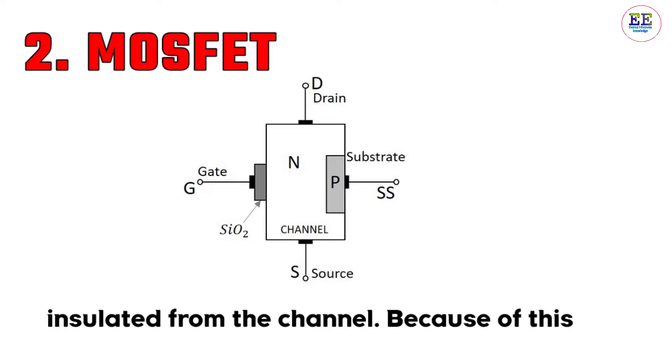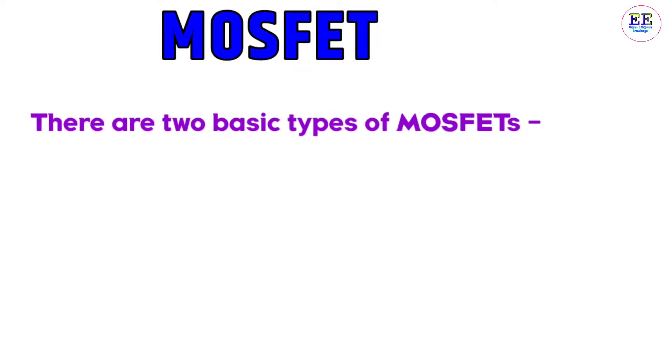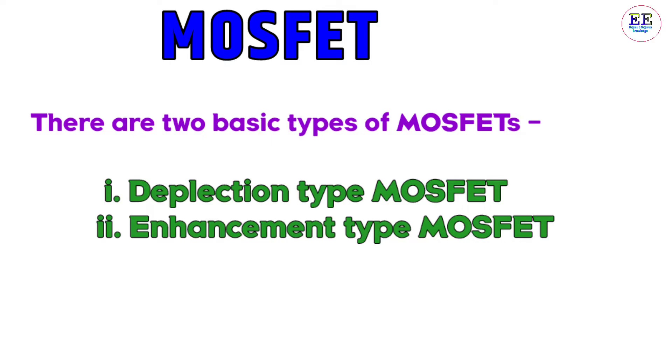Because of this, the MOSFET is sometimes known as IGFET, which stands for insulated gate field effect transistor. There are two basic types of MOSFETs: number one, depletion type MOSFETs, and number two, enhancement type MOSFETs. This is the symbol of depletion and enhancement type MOSFETs.